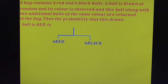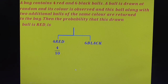Observe the solution. A bag contains 4 red and 6 black balls. The total number of balls is 4 plus 6, which is 10. The probability to get a red ball is 4 by 10, because there are 4 red balls out of a total of 10. The probability to get a black ball is 6 by 10, since there are 6 black balls.